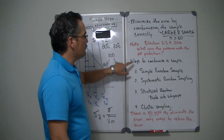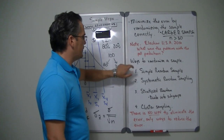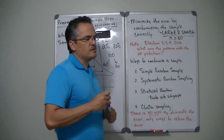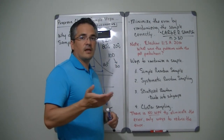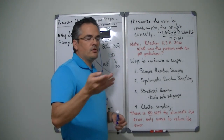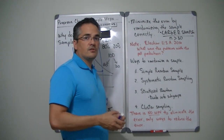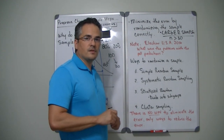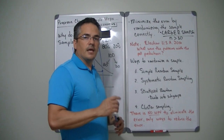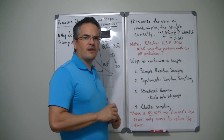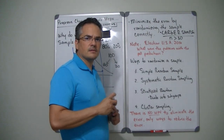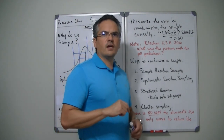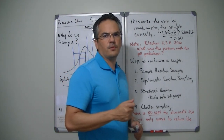Let's talk about ways to randomize your sample. Another thing you need to do is randomize your sample. If you don't randomize your sample, you could end up with a lot of really faulty results — and that is very bad statistics, very bad science. There are four basic ways in which you can randomize a sample.